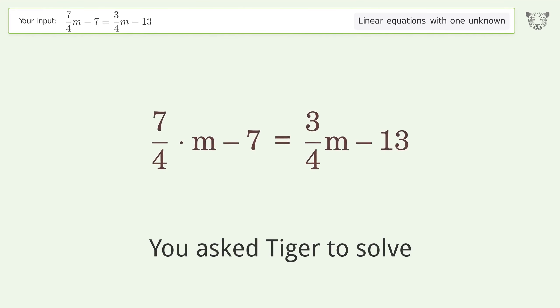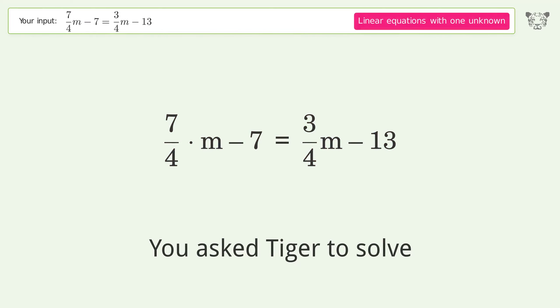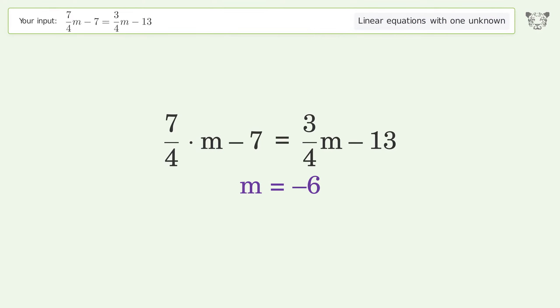You asked Tiger to solve this. This deals with linear equations with one unknown. The final result is m equals negative 6.